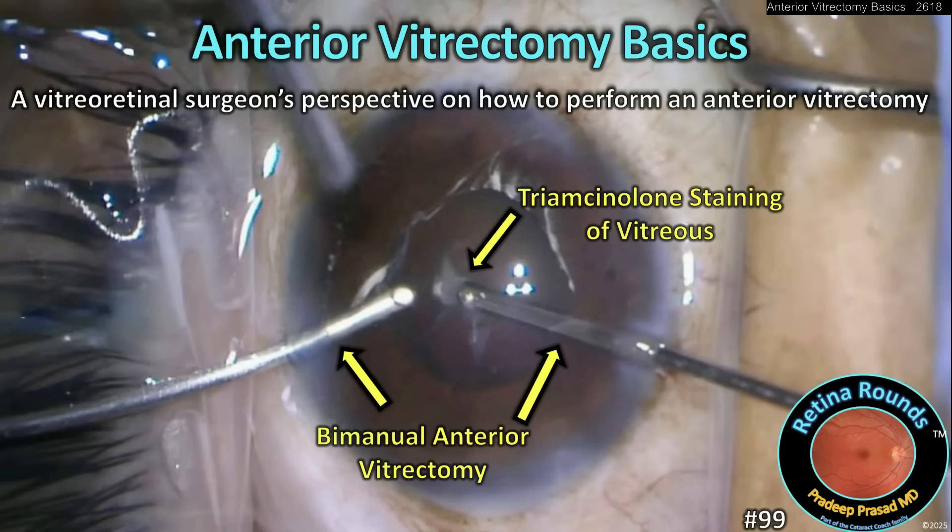You've heard this before, but no matter how skilled a surgeon you may be, complications always happen. One complication for cataract surgeons is posterior capsular violation requiring an anterior vitrectomy. Some of you have reached out and asked for a video on this, so today I'm going to give you a vitreo-retinal specialist perspective on how to perform this procedure.